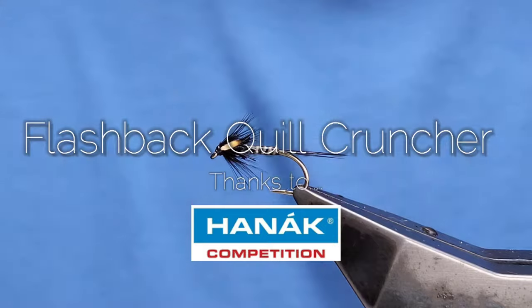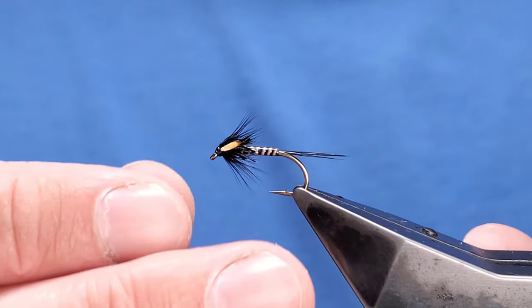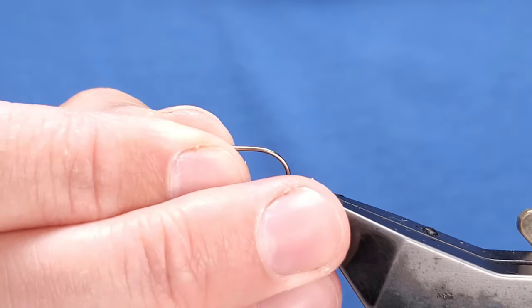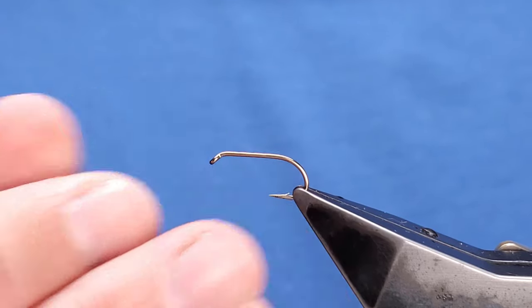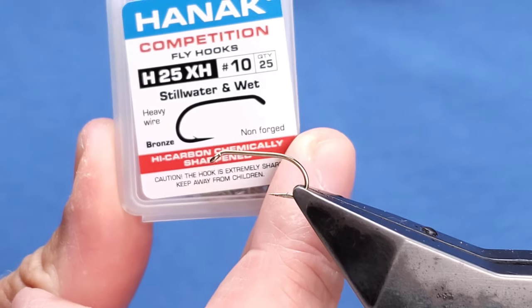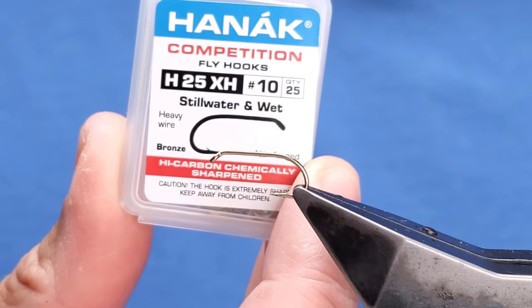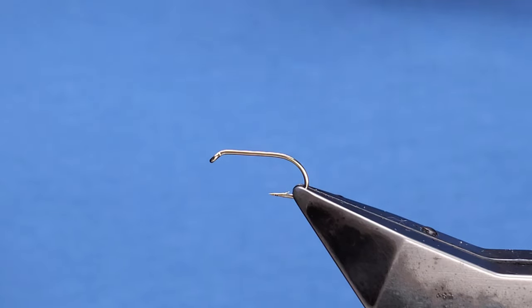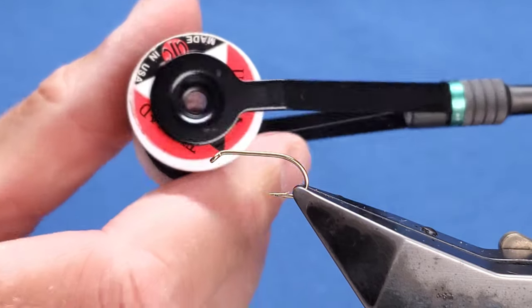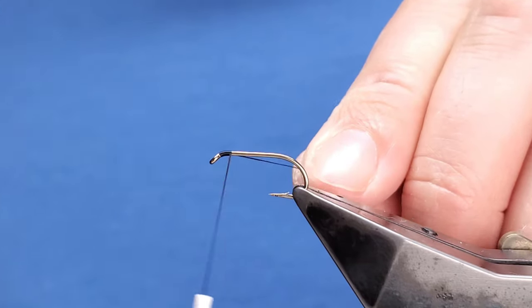This is one of my favorite cruncher patterns, or magnet depending on what you know it as. This is the flashback stripped quill version on a size 10. I'm using the new Hanak H25XH hook which is from Frančič himself, or Unique Flies. John Emerson will have these. I'm starting with UTC 70 in black.